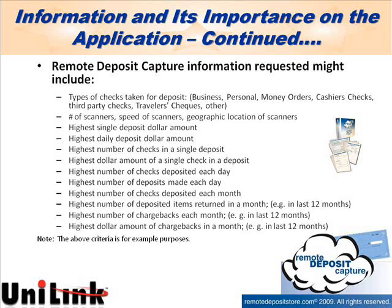If they start sending a lot of cashier's checks for under $3,000 or money orders, you may figure out they may be money laundering — purchasing items just under the $3,000 threshold at another bank and then running them through RDC. These are things your BSA officer will want to know. You also want to know the number of scanners, the speed of scanners, and geographic location of scanners. Think about speed — putting hand-feed scanners in a high-volume office is very frustrating to the operator. Think about the volumes and purchase the appropriate scanner for that customer.